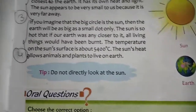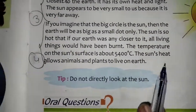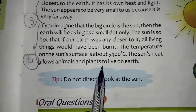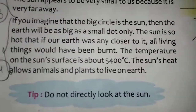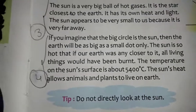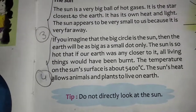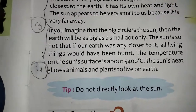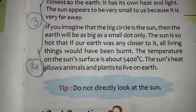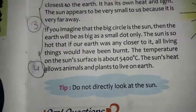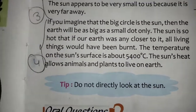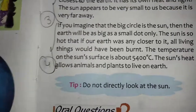Human beings and all living things could burn. The temperature of the sun's surface is about 5400 degrees Celsius. The sun's heat allows animals and plants to live on earth.